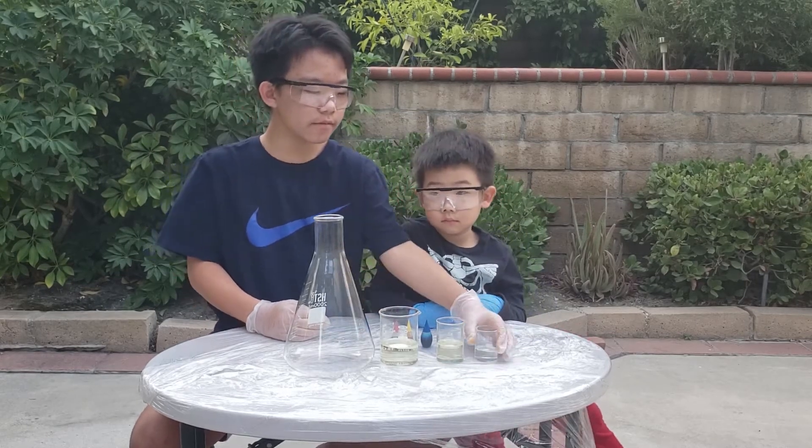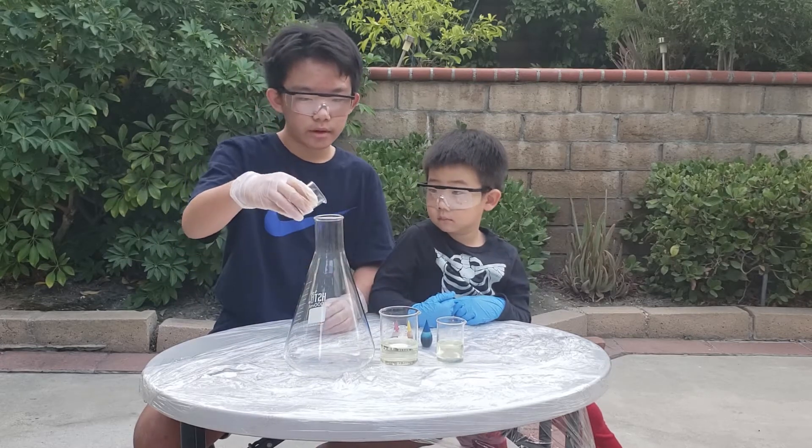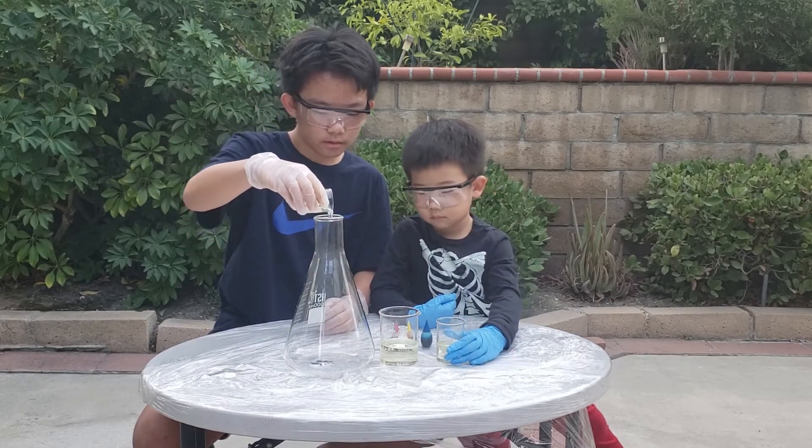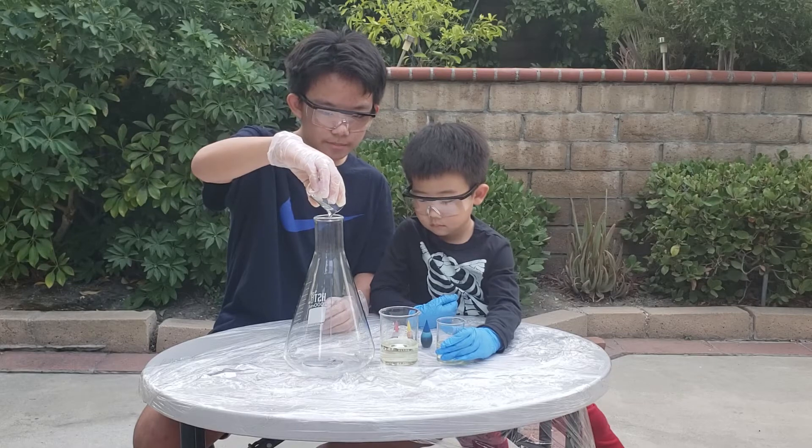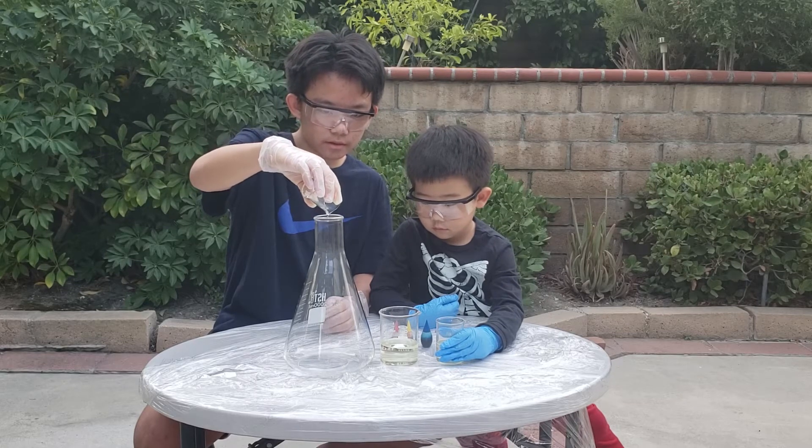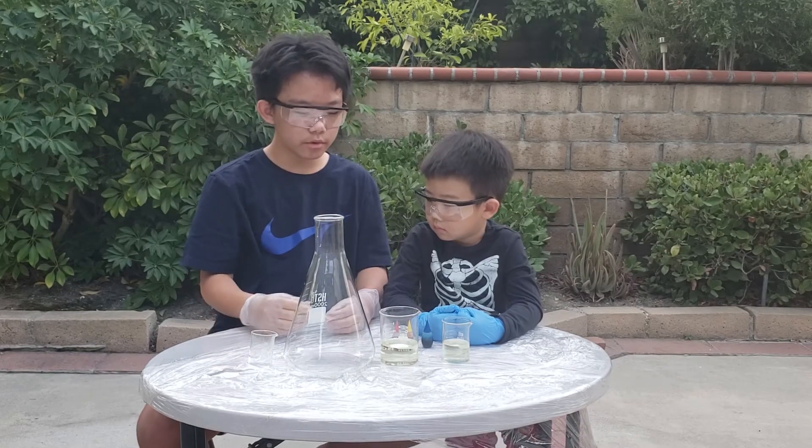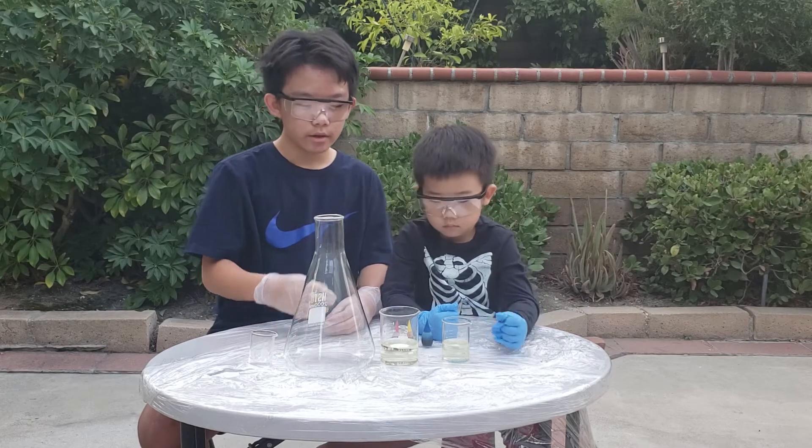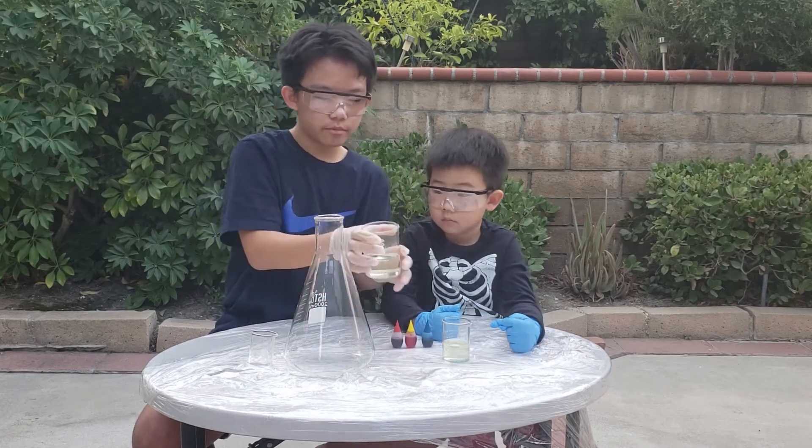So first off, let's pour our liquid soap into the flask. This flask is absolutely huge, isn't it? So now that we pour in our soap, let's pour in the 30% hydrogen peroxide.